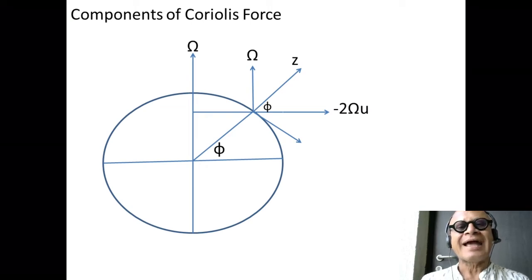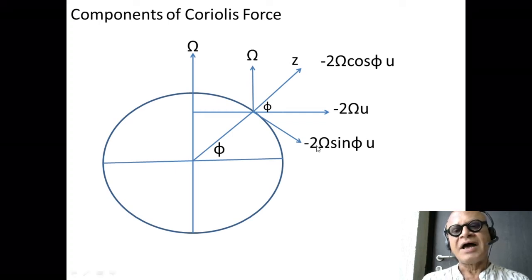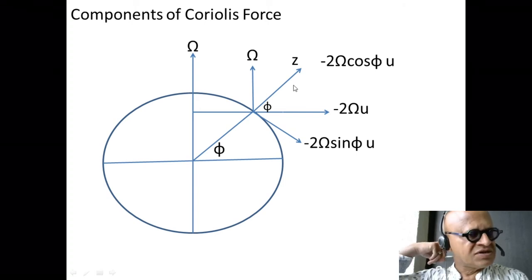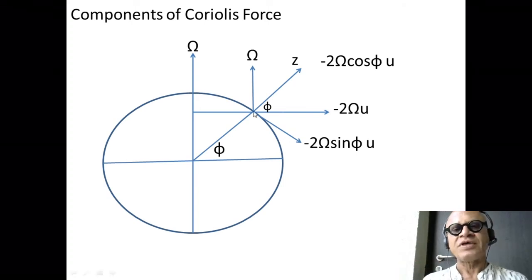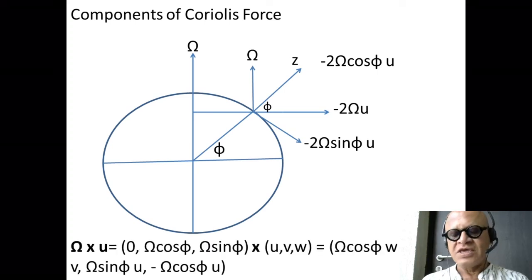So no projection on the longitudinal direction because projections don't happen when there is a 90 degree angle. Ω cos φ is in the latitudinal direction, and Ω sin φ is in the local z direction. So we have -2Ω × u acting in the x direction because of the formula we already derived. So that's going to be -2Ω sin φ u in the latitudinal direction, and -2Ω cos φ u in the z direction.